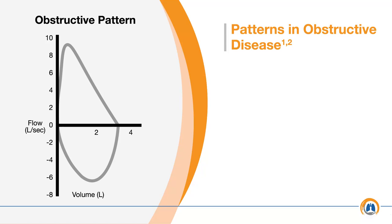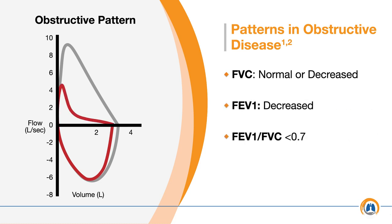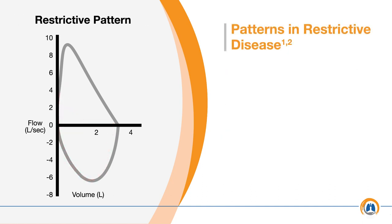In obstructive diseases like asthma or COPD, FVC value may be normal or decreased, the FEV1 value is decreased, and the FEV1 to FVC ratio is less than 0.7.